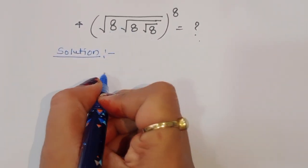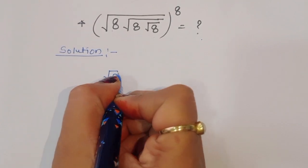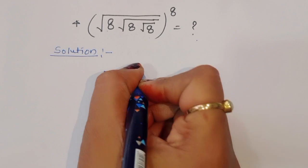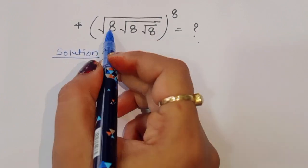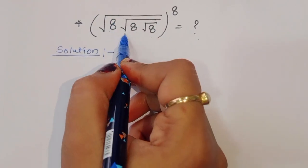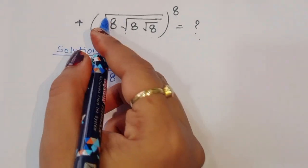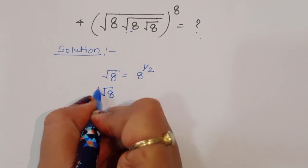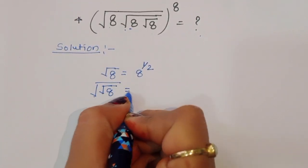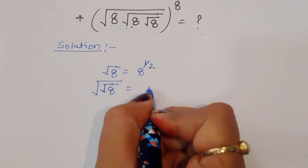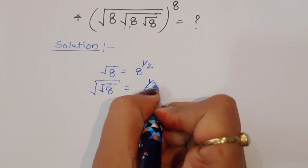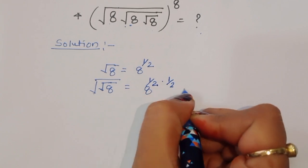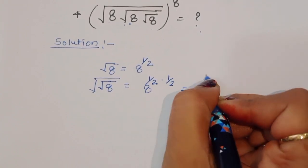We can write square root of 8 as 8 power 1 by 2. So square root of square root of 8 means double square root of 8, giving us 1 by 2 times 1 by 2, which equals 8 power 1 by 4.